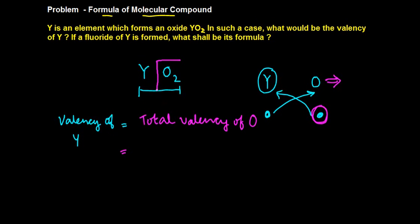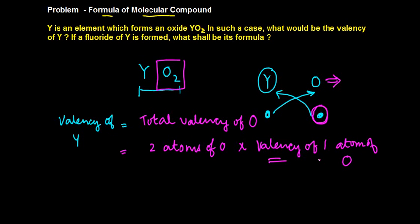Now for O, how many atoms do we have? We have two atoms of O, right? Two atoms of O times valency of one atom of O. And how much is the valency of one atom of O?